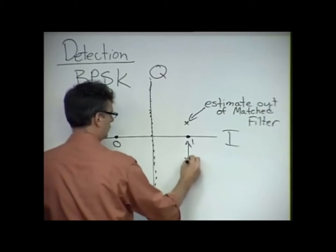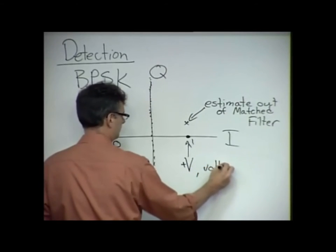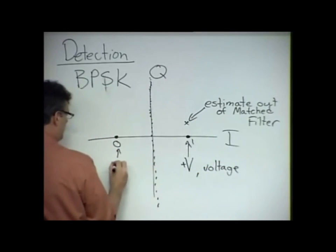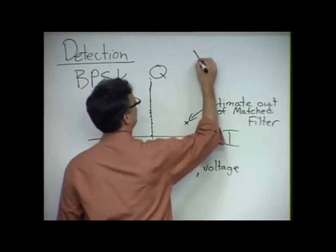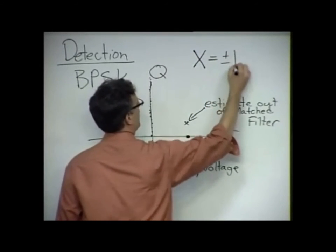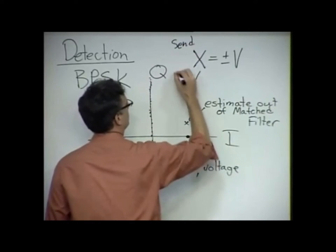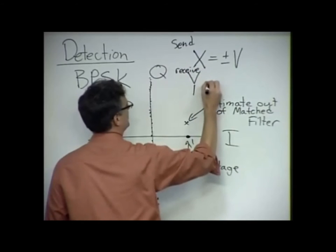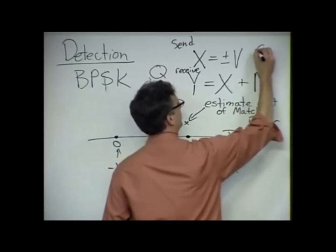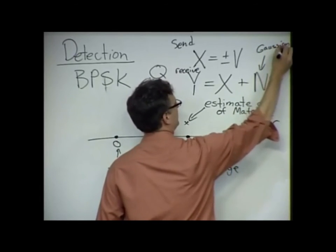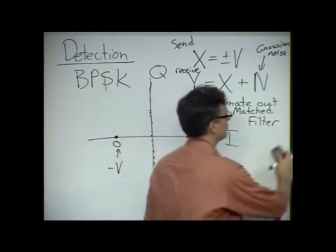So I'm going to transmit this, but the actual point will be this plus noise, plus noise. This is an example of an estimate out of the matched filter. So this is a voltage, voltage V. Of course, this would be negative V. And I sent either a plus or a minus V. Out of my matched filter, I receive that value plus Gaussian noise.